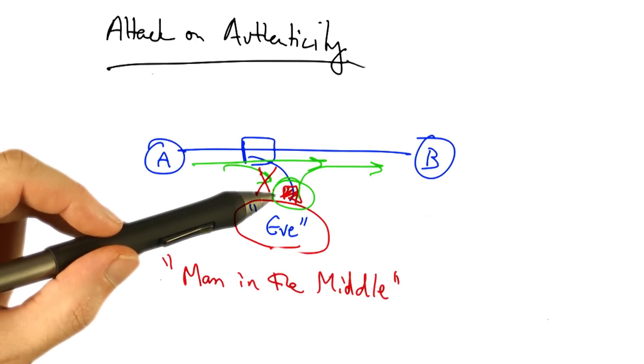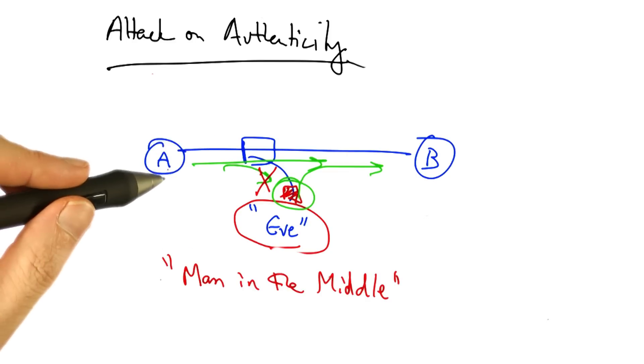Alice could also make it appear as though this message came from Alice, in which case, the attack would be an attack on message integrity.